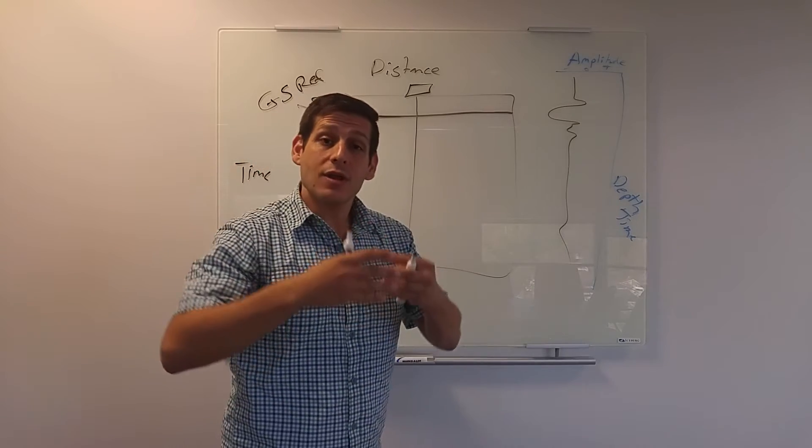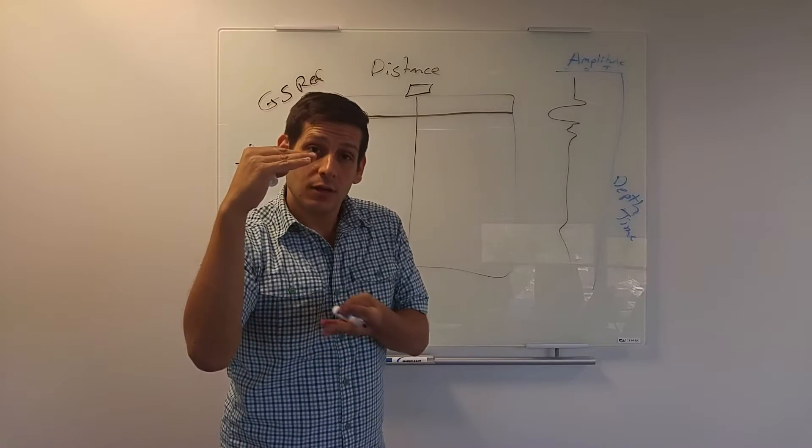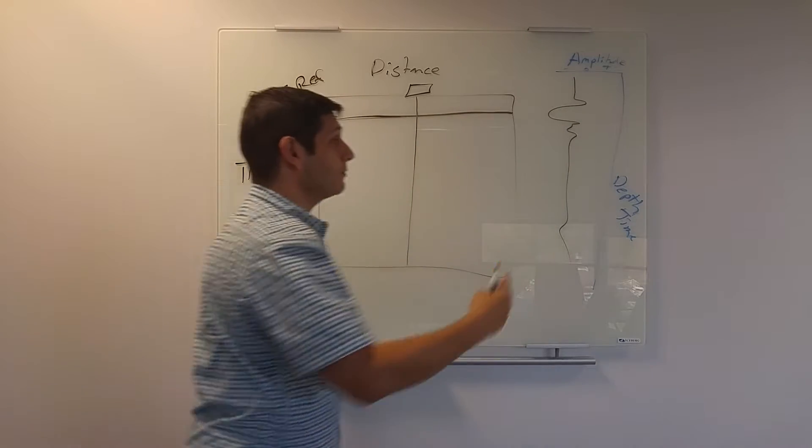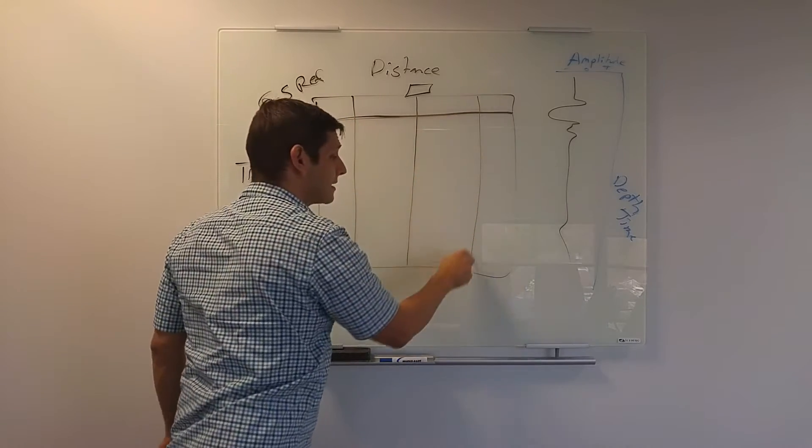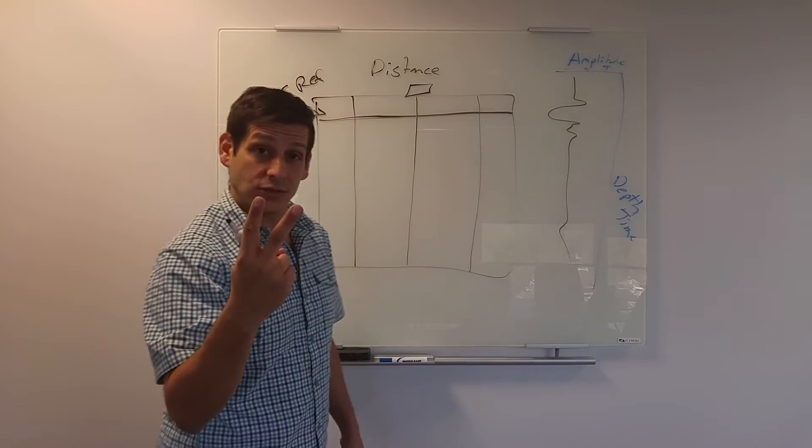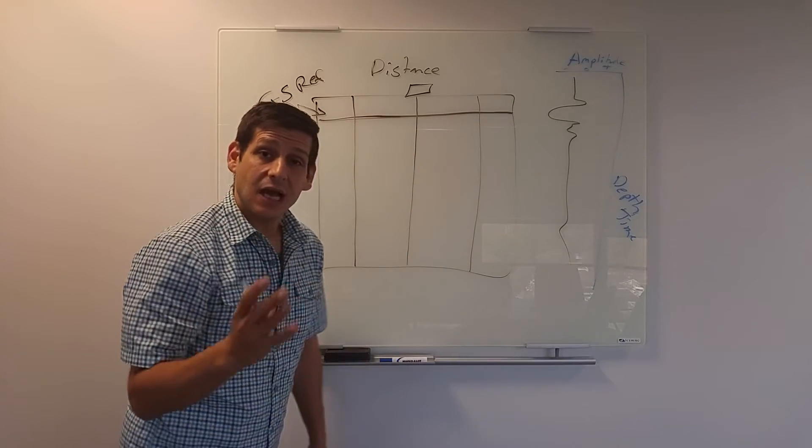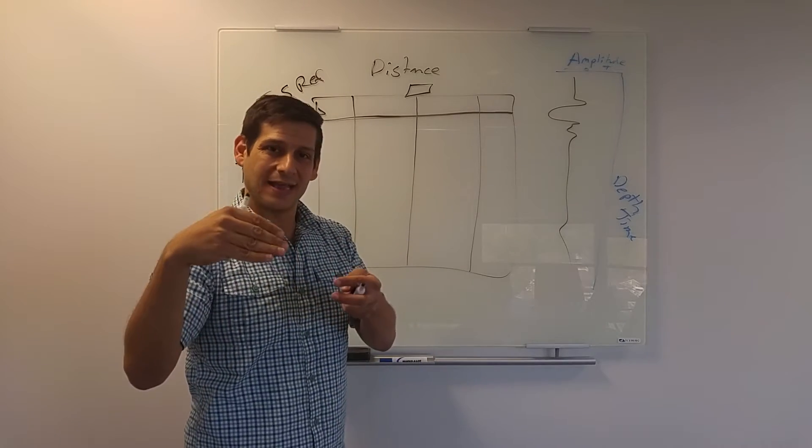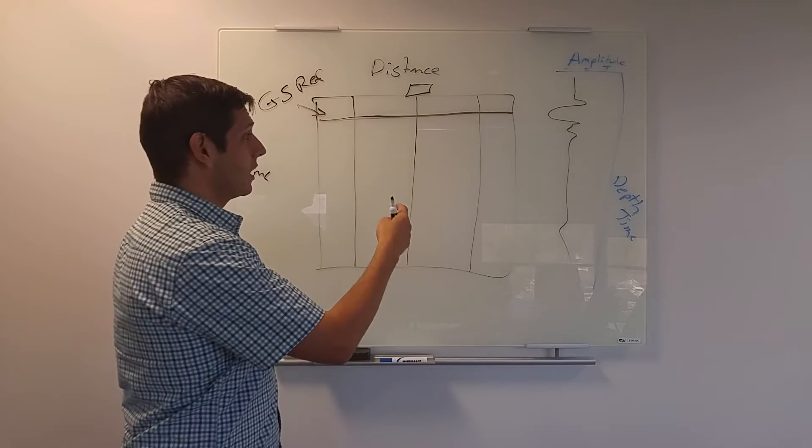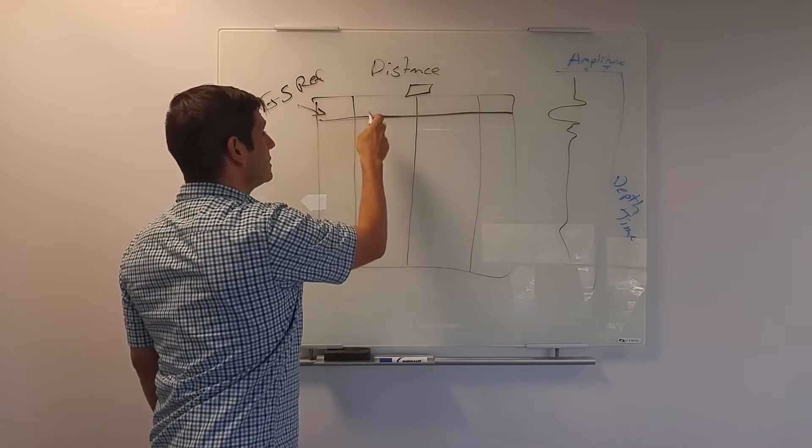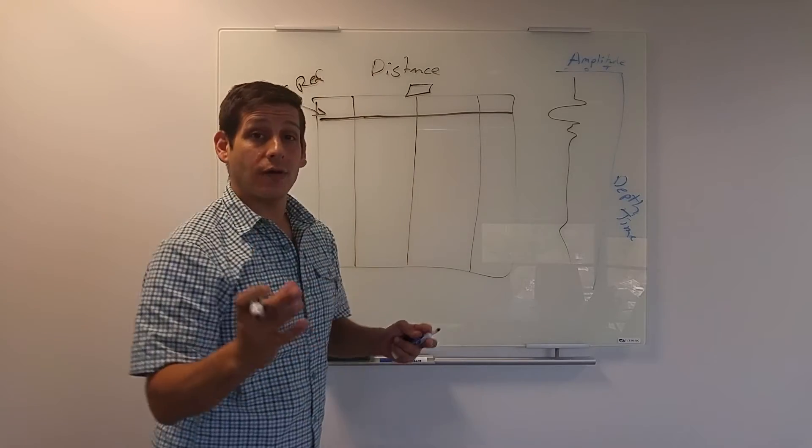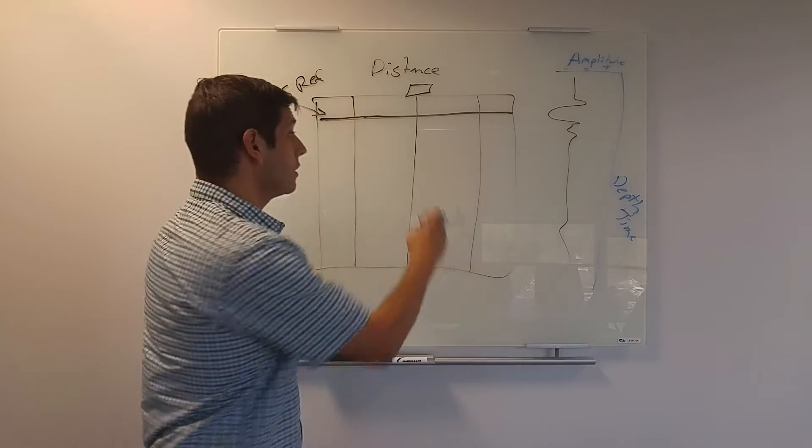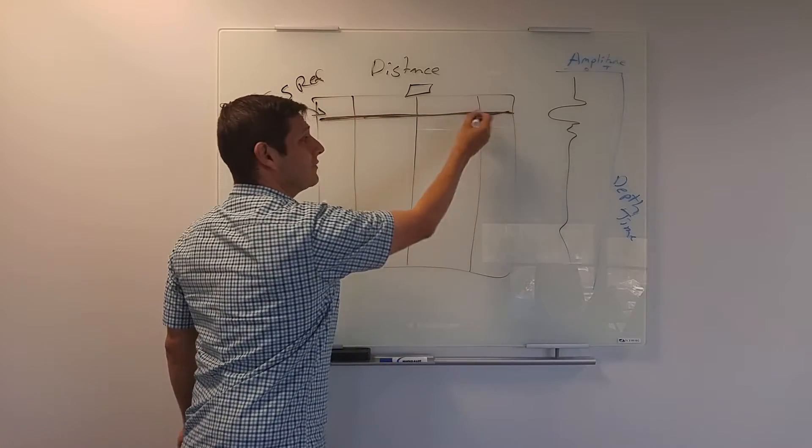So the greater the difference between the two materials, the greater the amplitude of the reflection. What's nice about the 1D data, this wigglegram, is it can show you in different places exactly what the amplitude is. With two-dimensional data that is your profile, it can be difficult to see subtle variations.